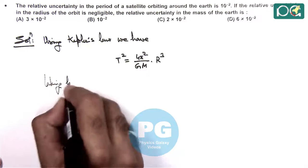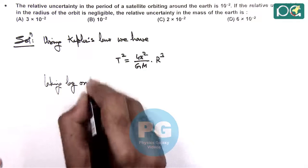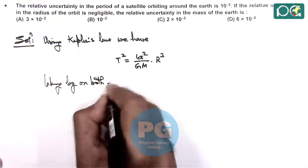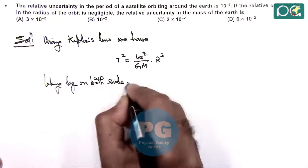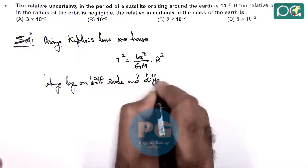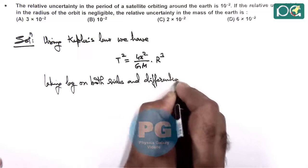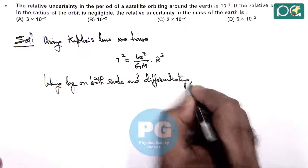Taking log on both sides and differentiating gives... here the logic we already discussed how we relate the uncertainties.